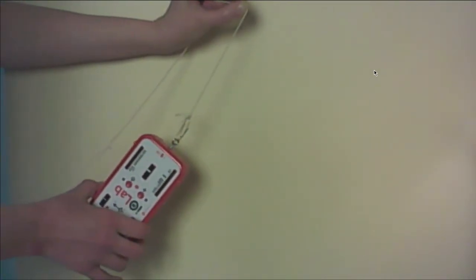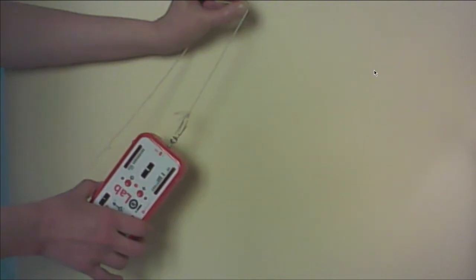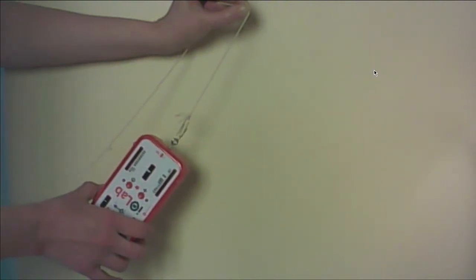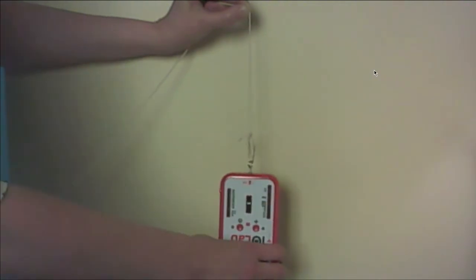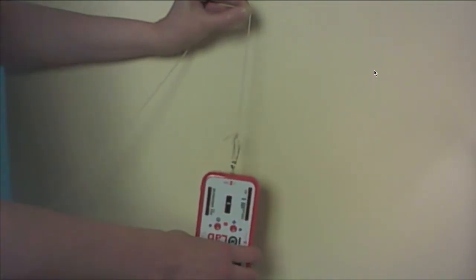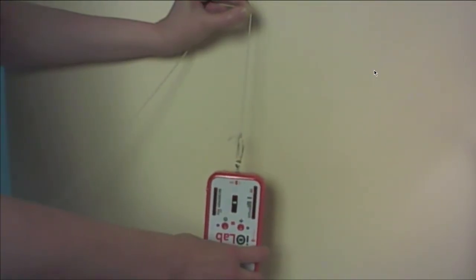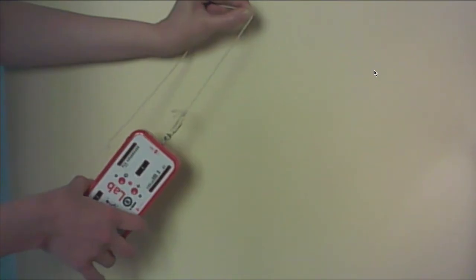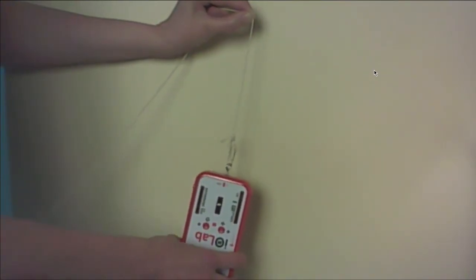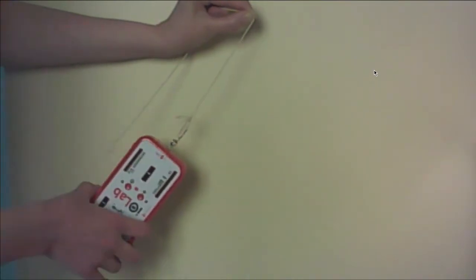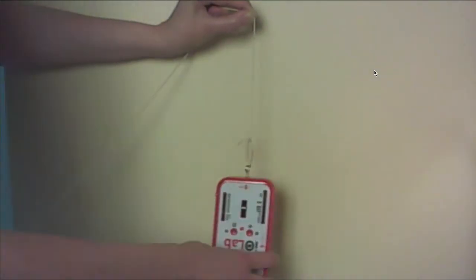When it's out here, the tension force that we're going to measure is going to be the weight times cosine theta, where theta is the angle that the pendulum makes from the vertical. We expect to get a maximum force here and a minimum force over here. One complete swing of the pendulum is from here, all the way over, all the way back. That's one oscillation.